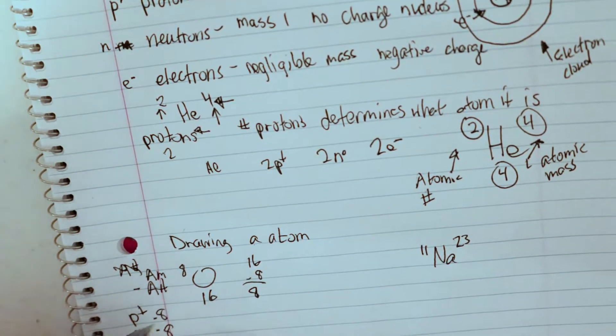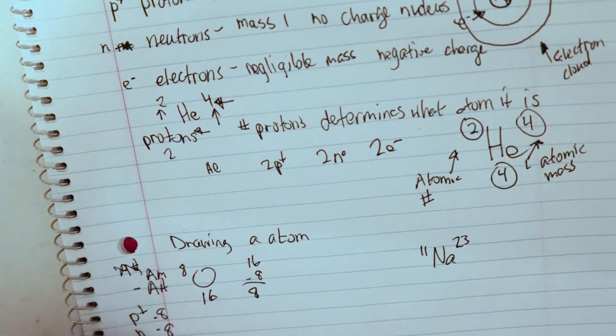And then my number of electrons is going to equal the number of protons I have, so I have 8 electrons.